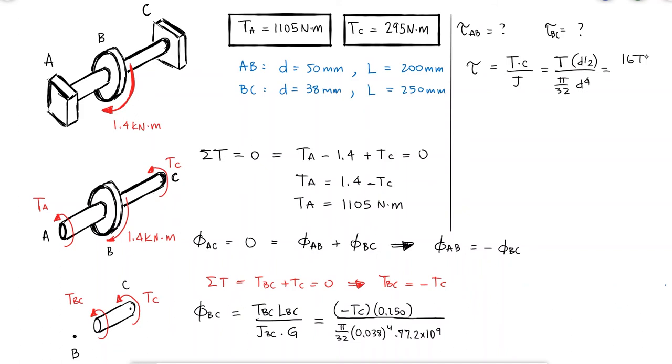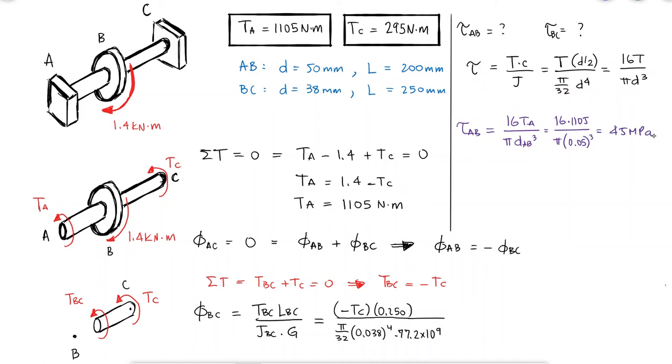With these torque values and our shearing stress equation, we find that the shearing stress for section AB is 45 MPa and that the shearing stress for section BC is 27.4 MPa.